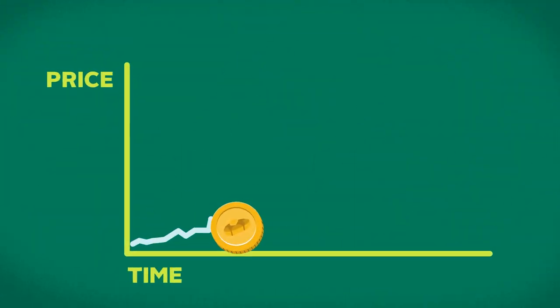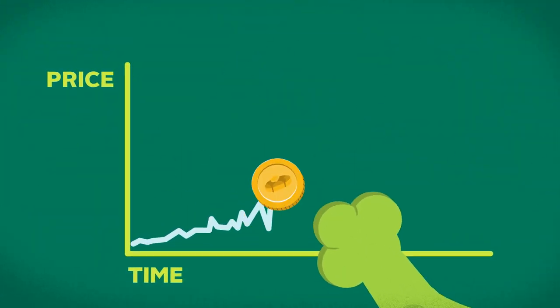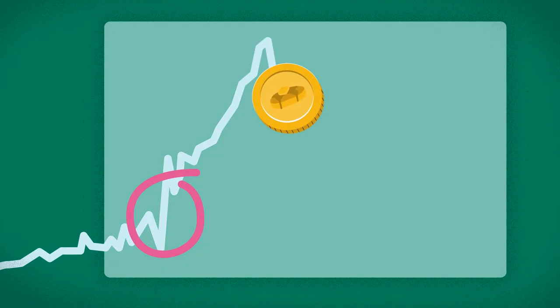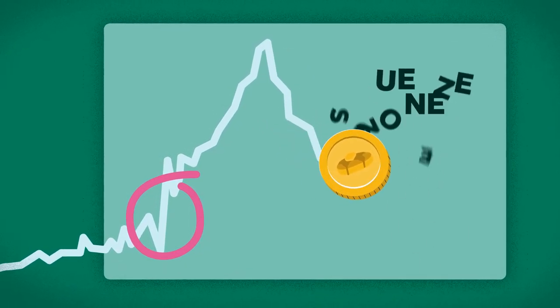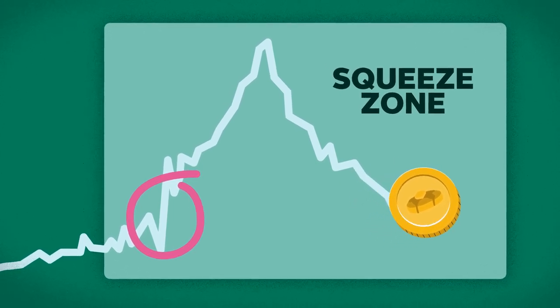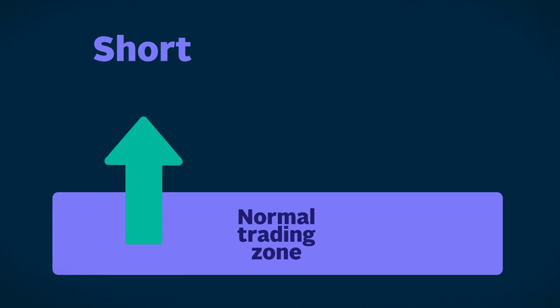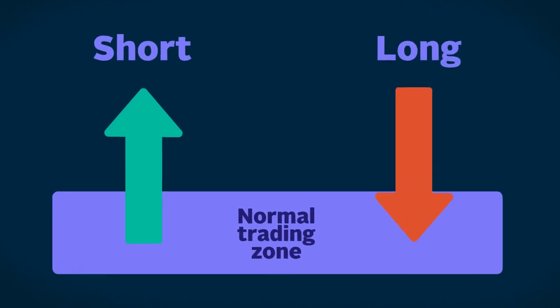In the same way in trading, squeezes happen when the price of an asset goes against the trader's predictions, forcing them to close out their positions and eventually prompting a rapid rise or fall in the asset's price. Generally, there are two types of squeezes: short squeezes and long squeezes.